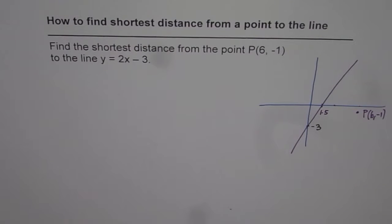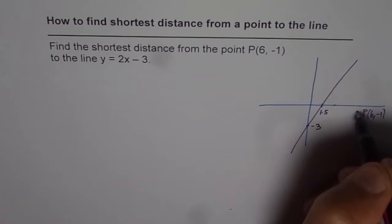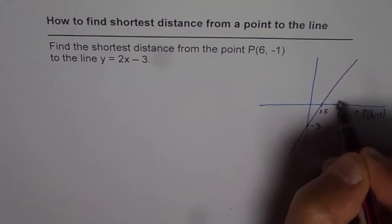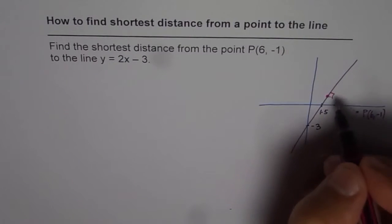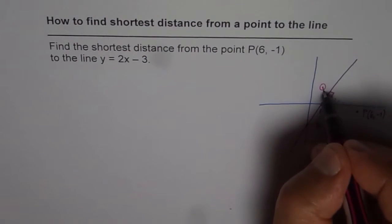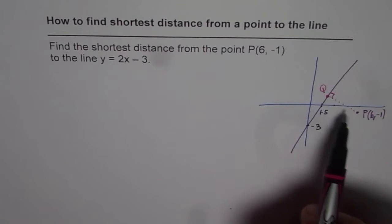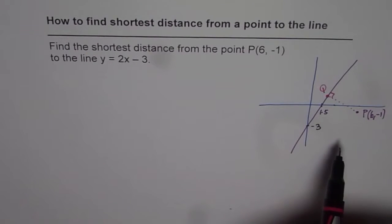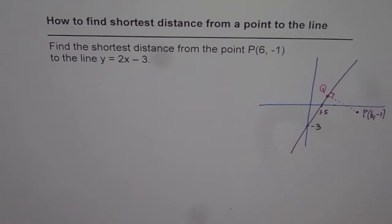Now, to find the shortest distance, we need to drop a perpendicular from this point to the line. Once we drop a perpendicular, somewhere it is going to cross the line and we will call that point Q. Once we find the coordinates of point Q, we can find the distance between P and Q using the distance formula: square root of (x₂ – x₁)² + (y₂ – y₁)². That is the method.